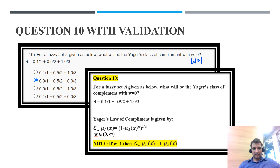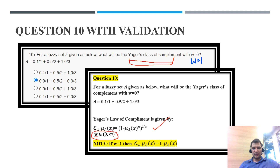Question 10 is based on Yager's class of complement. This question may be wrong because the formula for Yager's class is: C_W(μ_A(x)) = (1 − μ_A(x)^W)^(1/W). The range of W is between 0 and infinity, but W cannot be 0 or infinity — both are excluded. However, the question asks for Yager's complement with W equal to 0.